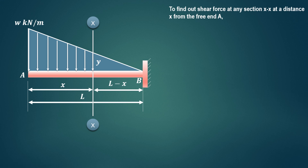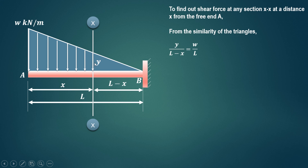Now we have to find out the shear force at any section XX. From the similarity of triangles, we'll first consider this smaller triangle and then the larger triangle. In the smaller triangle the height is Y and the base is L minus X. So Y upon (L minus X) equals W divided by L, where W is the height of the larger triangle and L is its base.